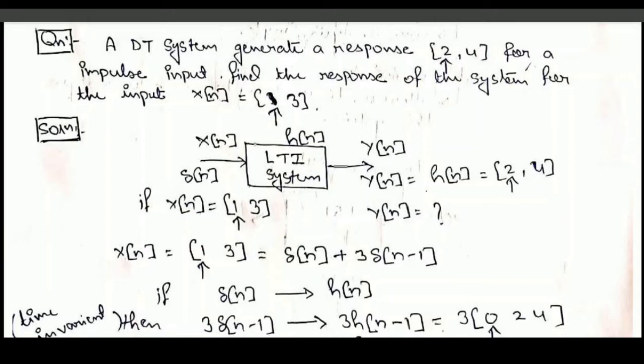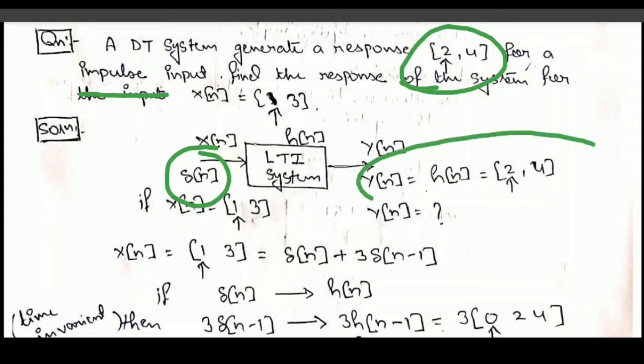As given in the question, this response is generated with an impulse input. It means if the impulse is given to the system as input, then the output will be {2, 4}.